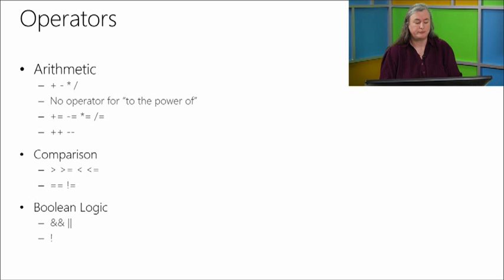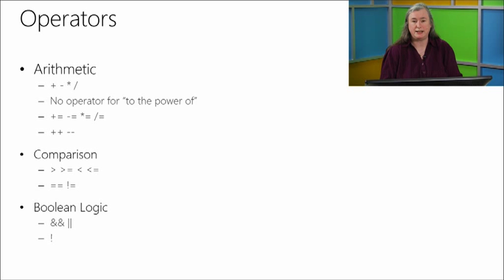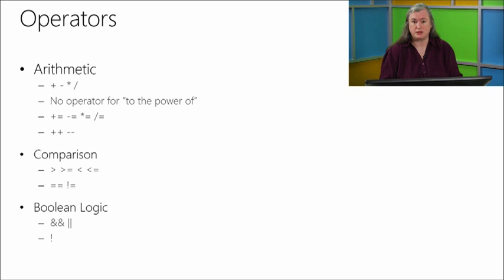We also have plus-plus and minus-minus in their before and after versions. For comparison, there's greater-than, less-than, greater-than-or-equal-to, and less-than-or-equal-to. In practice, C++ programmers rarely use greater-than-or-equal-to — it's purely an idiom. If we want to do something five times, we start at zero and go until it's less than five. It would be equivalent to go until less-than-or-equal-to four, but we just don't do it.